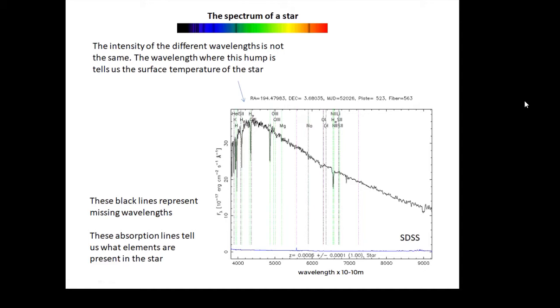You don't get the same amount of each wavelength. There's a particular wavelength where there's a maximum intensity, and this is very interesting. The position of this hump tells us the temperature of the star. Basically, the bigger the wavelength where the hump is, the cooler the star. The smaller the wavelength where the hump is, the hotter the star.